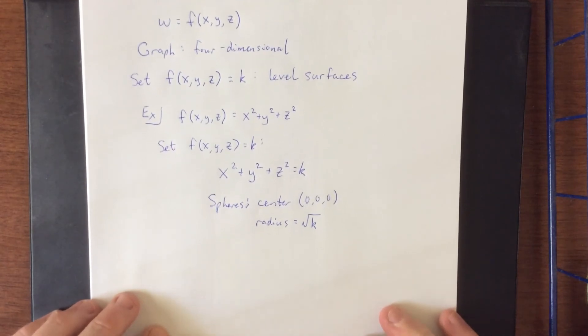So you could think of these level surfaces as being concentric spheres where the larger the value of the function, the larger the value of the radius of the sphere. So if you wanted to consider values of k like 0, 1, 4, and 9, those would correspond to spheres of radiuses 0, 1, 2, and 3 whose center is at the origin.